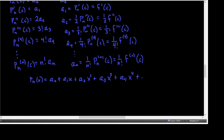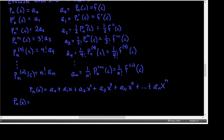Our Nth degree polynomial in general looks like: A sub 0 plus A sub 1 times X minus C plus dot dot dot plus A sub N times X minus C to the Nth. Substituting in for each A with a subscript: A sub 0 is F of C, plus A sub 1 which is F prime of C times X minus C.